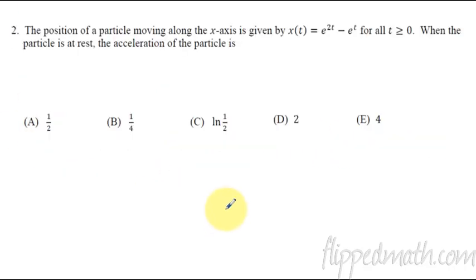For number two, the tricky part here is looking at when the particle is at rest. This statement right there means that we're looking for when does the velocity equal zero. So that's what we have to figure out first. Then when we have that, we're going to say it asks,